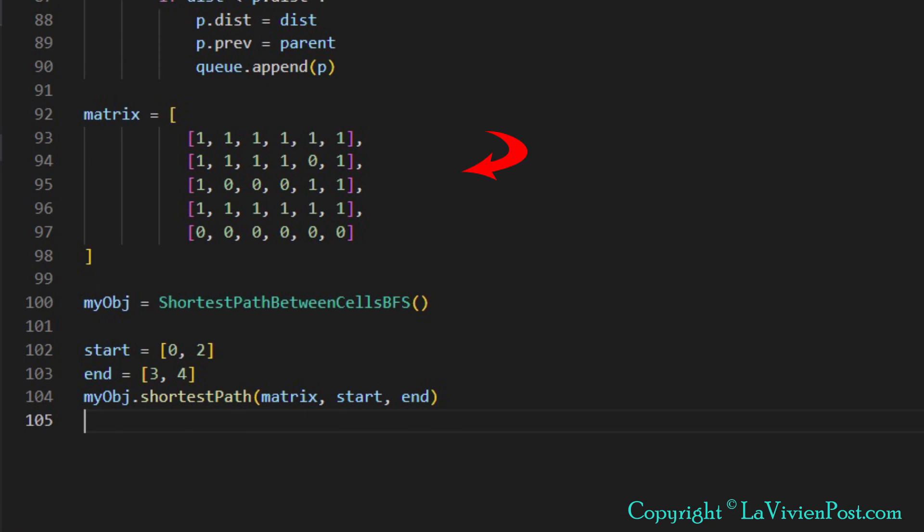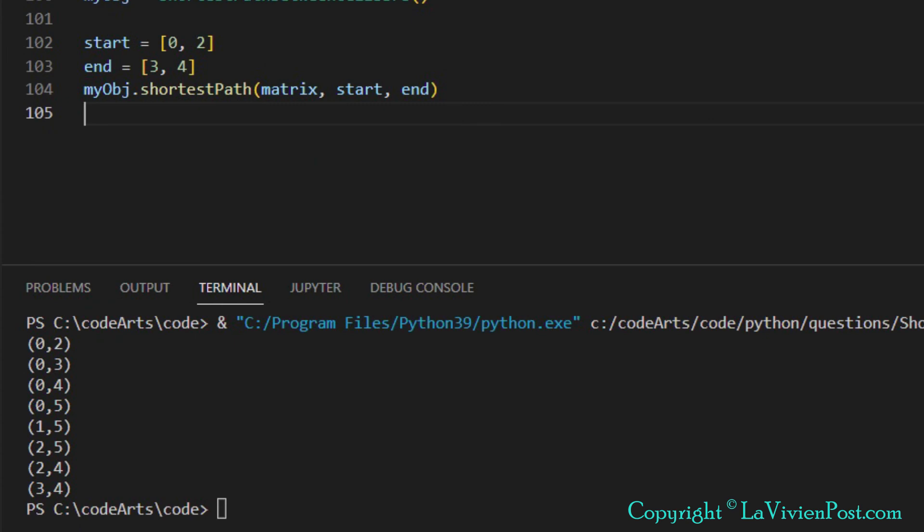In the main function, we have a matrix defined like this. We are going to run three cases. The first one is from upper left to lower right. The start cell is 0,2 and the end cell is 3,4. When we run BFS, we get the path from start cell to end cell.